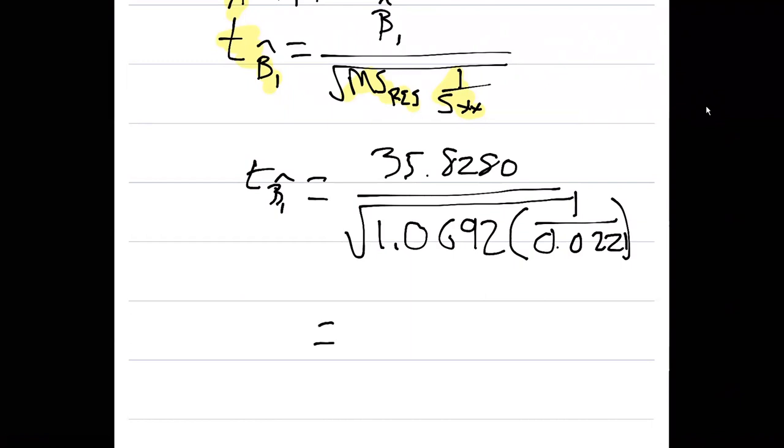If we do the calculations out, 35.8280 divided by the square root of 48.3801, and then the final number is 5.1510. That's the value for t sub beta one hat is 5.1510.